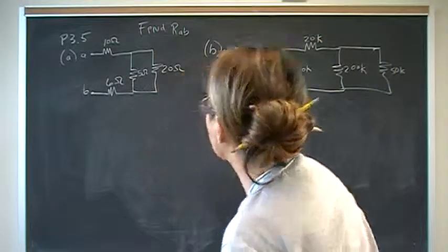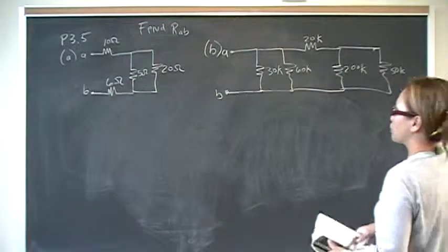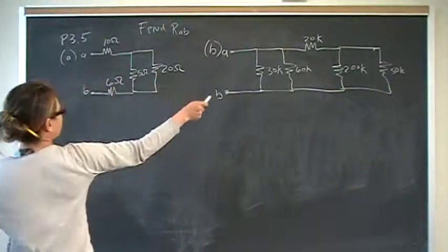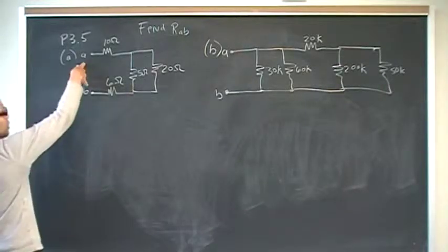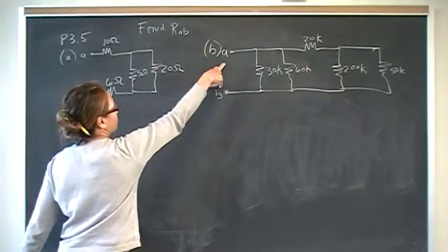Okay, so this is problem number 5 from chapter 3. We have two different sets of resistors connected in various ways and we need to find the equivalent resistance seen from point AB.